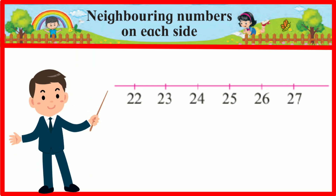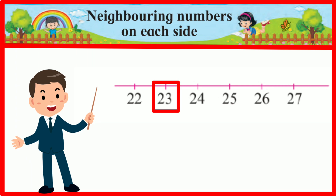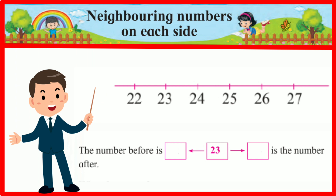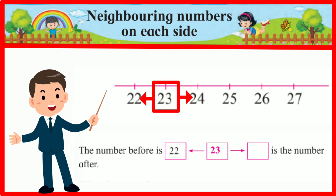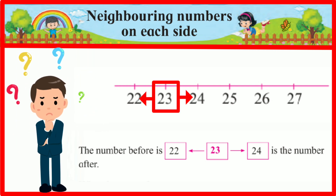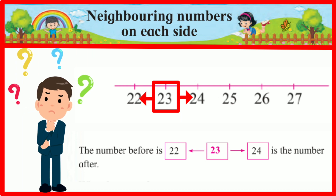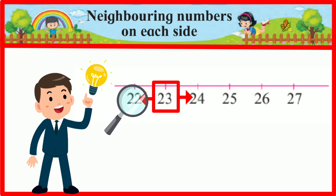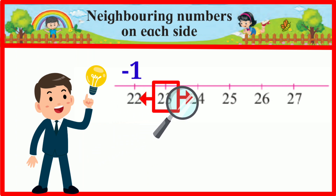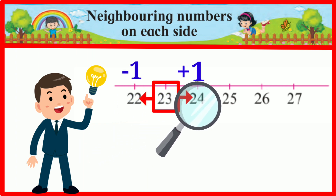Let's take 23. The number before 23 is 22, and the number after 23 is 24. From this example, what do we see? For any number, the neighbor on the left is one less, and the neighbor on the right is one more.